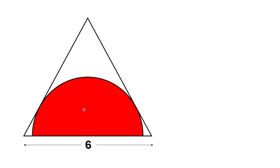We have to find the area of this semicircle. Consider this point as the center of the semicircle. The distance from this point to the edge is 3 units, because the total side length of the triangle is 6 units and this is the midpoint of that side. This is also 3 units. Consider this point as the tangent point of this circle.